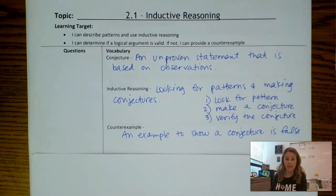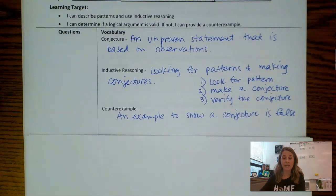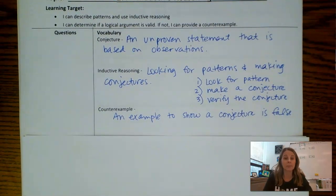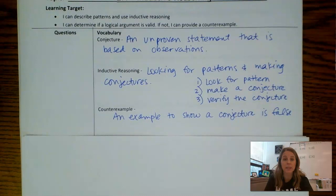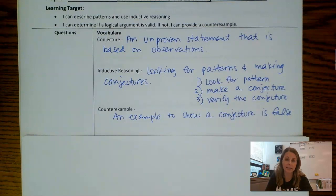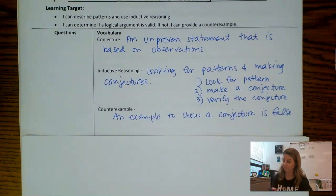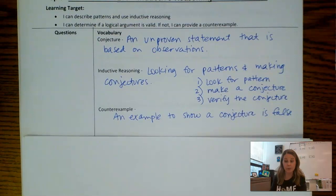Third item: counterexample. A counterexample is simply an example to show something is false, or to show a conjecture is false. Back to the example of every Monday being sunny — a counterexample would be that a Monday happens and it isn't sunny. If you can come up with one counterexample, then you have just disproven your conjecture. So these are the three items we're going to focus on today.